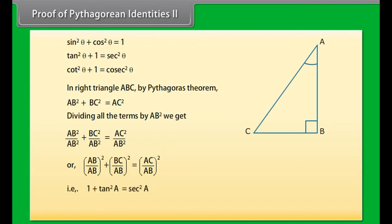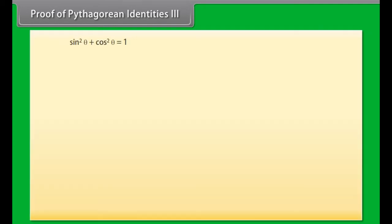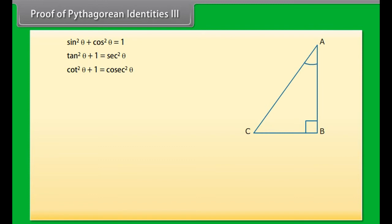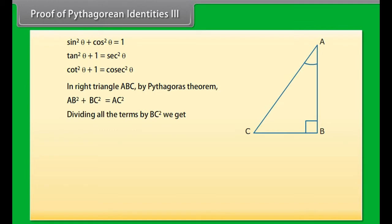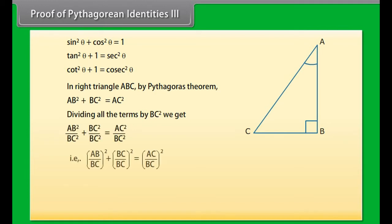Proof of Pythagorean identity 2: In right triangle ABC, by the Pythagorean theorem, AB² plus BC² equals AC². Dividing all terms by AB² we get (AB/AB)² plus (BC/AB)² equals (AC/AB)², that is 1 plus tan²A equals sec²A. This is true for all A such that 0° ≤ A < 90°.